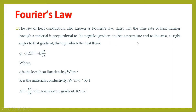Heat transfer is proportional to the negative gradient in temperature and to the area at right angles to that gradient through which heat flows. The equation is q = -k (dT/dx), where q is the local heat flux density, k is the material thermal conductivity defined in watts per meter kelvin, and dT/dx is the temperature gradient in K/m.